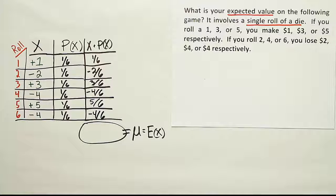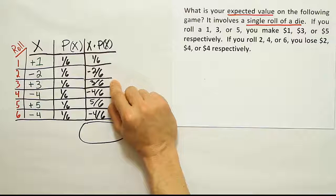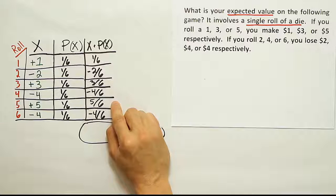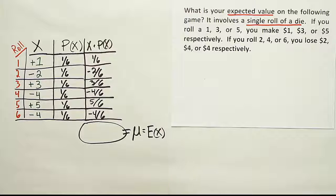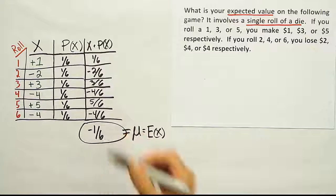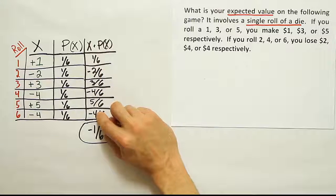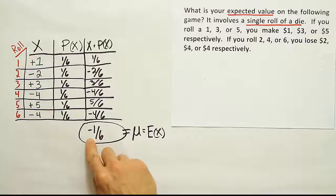Now let's add these together: 1/6 + (−2/6) = −1/6; then −1/6 + 3/6 = 2/6; then 2/6 + (−4/6) = −2/6; then −2/6 + 5/6 = 3/6; then 3/6 + (−4/6) = −1/6. To double-check: negatives sum to −2 − 4 − 4 = −10, positives sum to 1 + 3 + 5 = 9, giving a net of −1 over 6. So the expected value is −1/6.